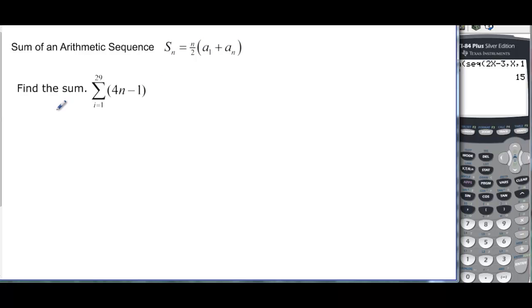So we want to find the sum here. And we know that we want to sum up 29 terms, so we're really trying to find S_29. Well, I need to know a_1 and that's just 4 times 1 minus 1, so a_1 is equal to 3.